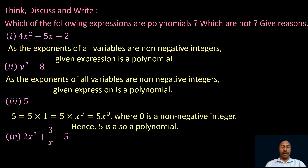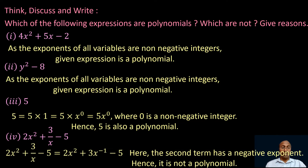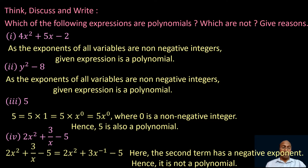Take the fourth one: 2x square plus 3/x minus 5. Here, 3/x can be written as 3·x power minus 1. So the expression becomes 2x square plus 3·x⁻¹ minus 5. The second term has a negative exponent. Since the powers of variables in a polynomial must be non-negative integers, and here we have a negative exponent, this expression is not a polynomial.